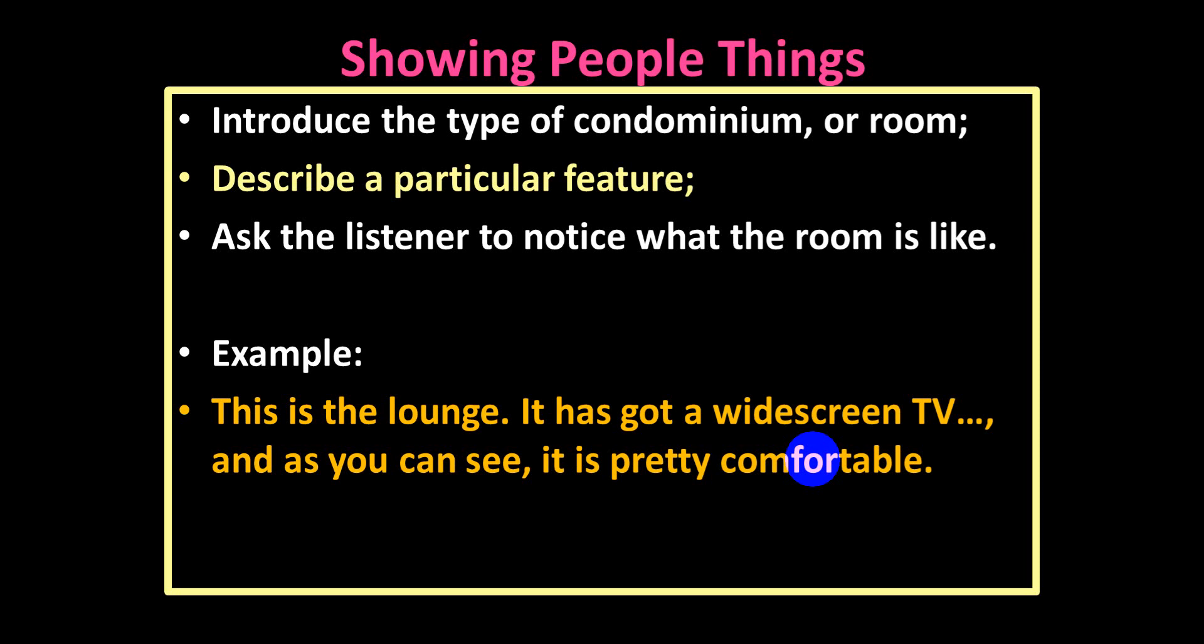So if you want to show people an estate or property, you first of all say: this is a house, this is a small house, this is a big house, this is a flat, this is a campsite, this is a bed and breakfast, or this is a guest house. So first of all, you have to mention the type of the condominium or accommodation.